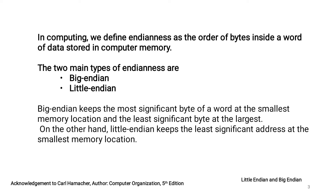In Big Endian, the most significant byte of the word is stored at the memory location of the lower order address, and the least significant byte is stored at the memory location of the higher order address. On the other hand, in Little Endian, the least significant byte is stored at the lower order address, and the most significant byte is stored at the higher order address.